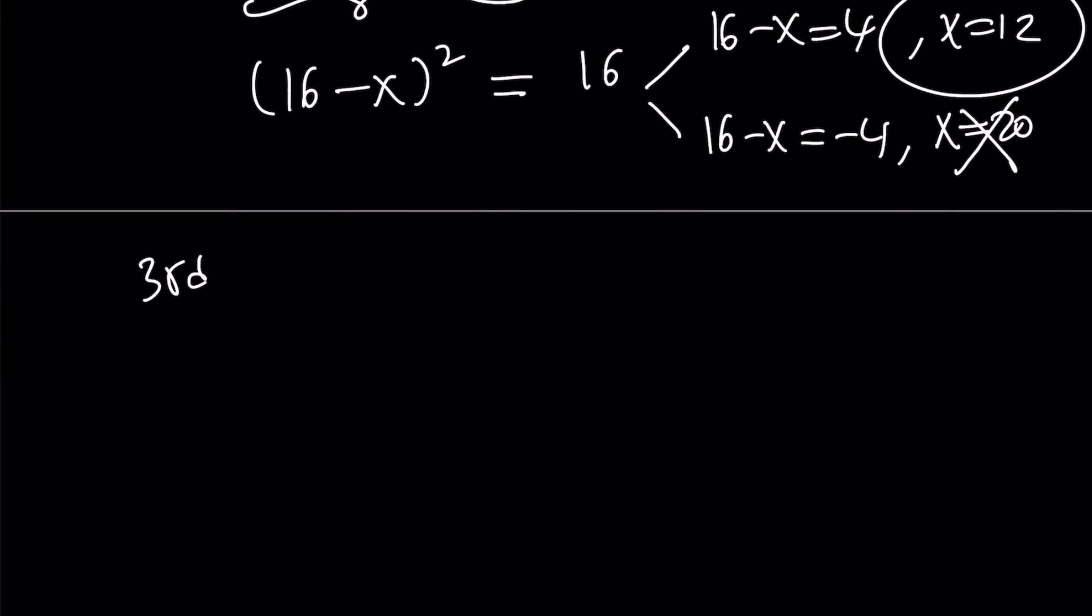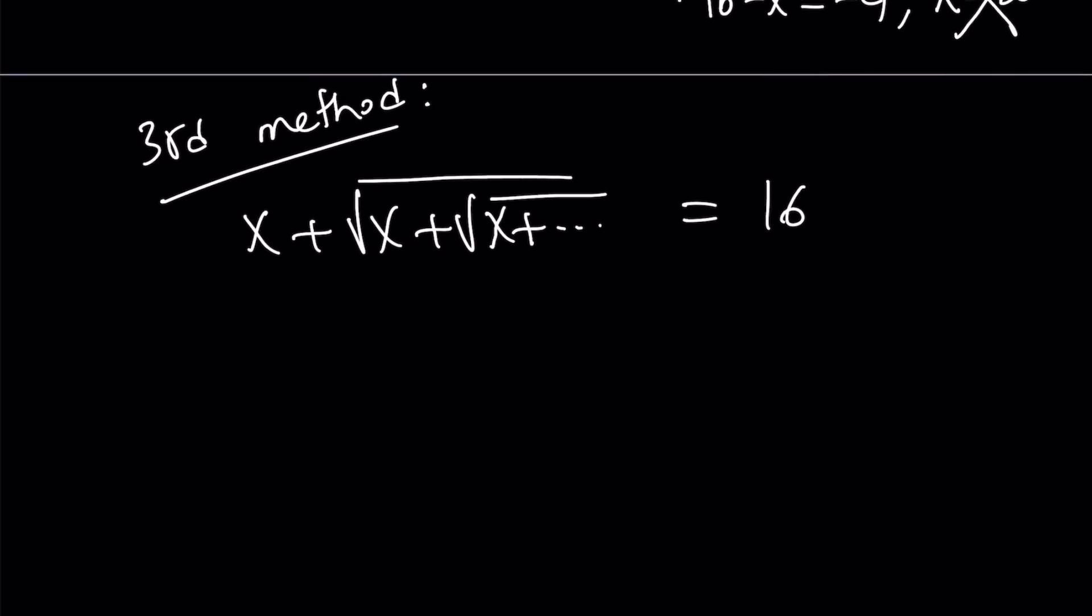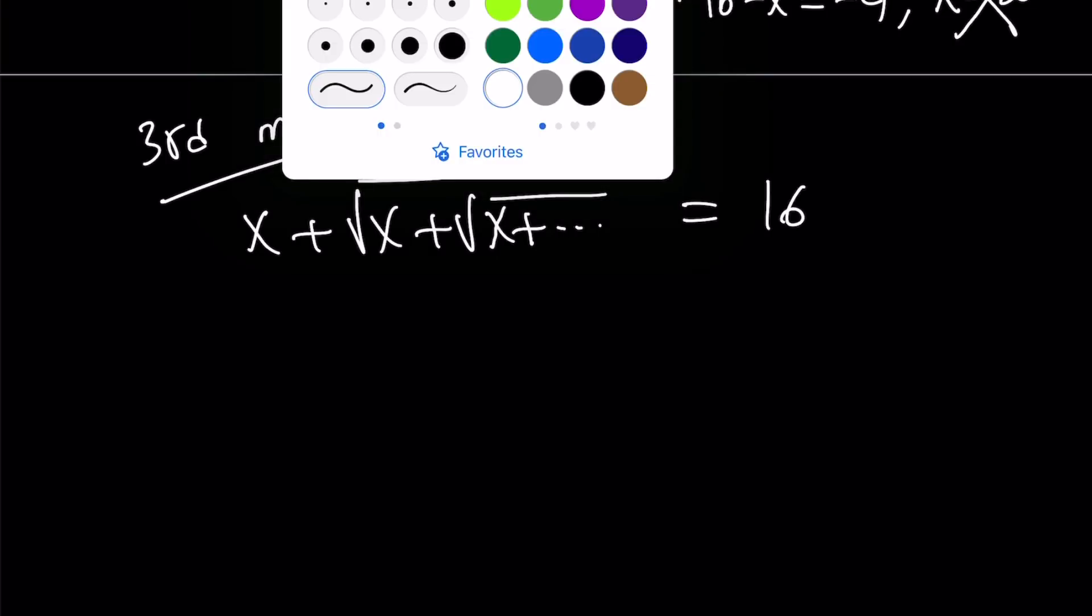Let's take a look at the third method. Our third method is basically starting with the original equation again. I'm pretty sure you found another way to do this. Notice that I don't have a radical on the outside, but I can basically square root both sides. Let's go ahead and square root both sides.